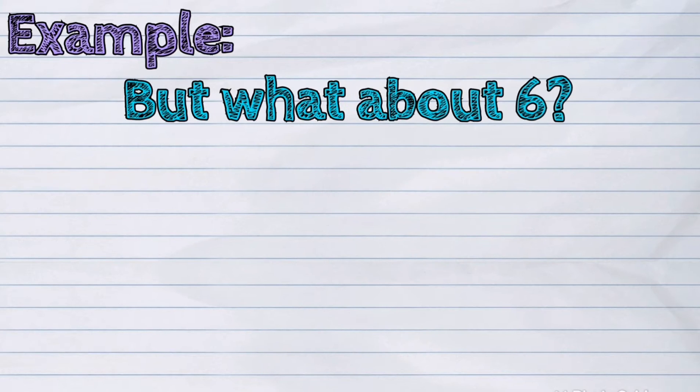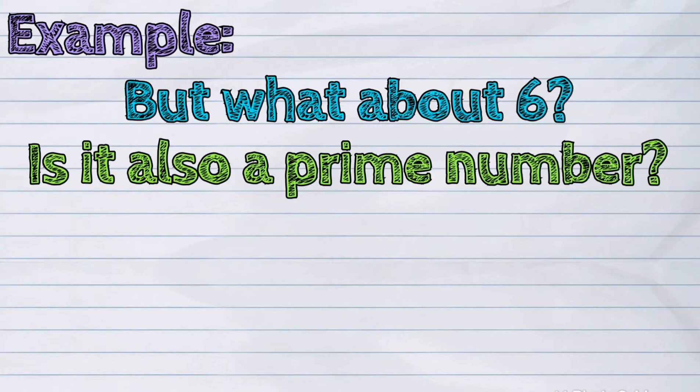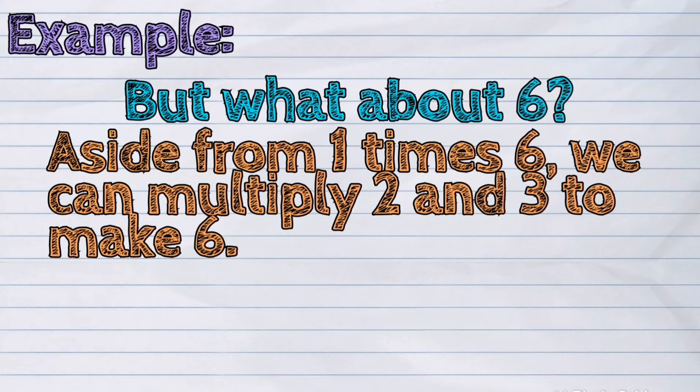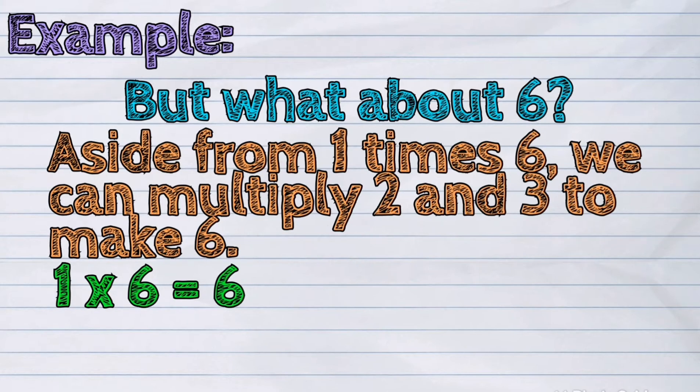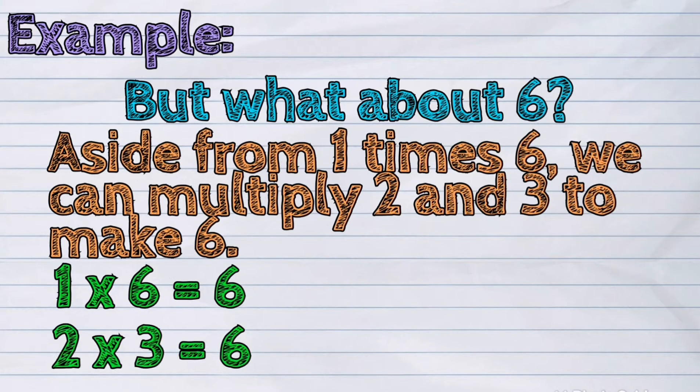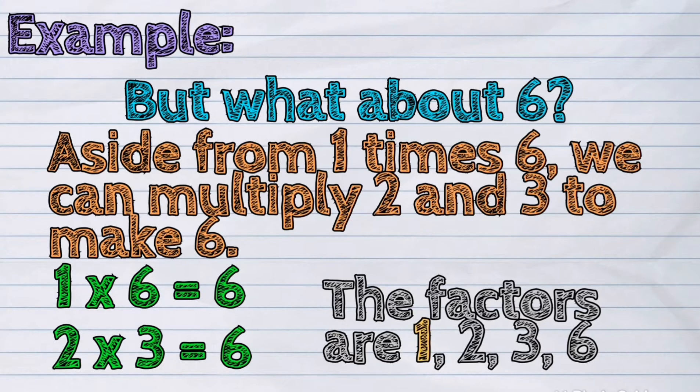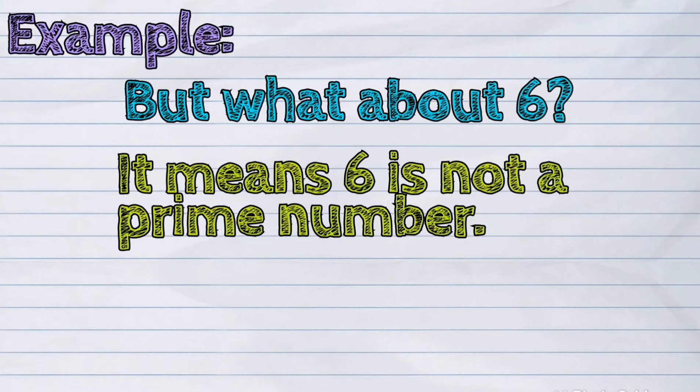But what about six? Is it also a prime number? Can we multiply any other whole numbers to make six? Yes, we can. Aside from one times six, we can multiply two and three to make six. The factors are one, two, three, and six.